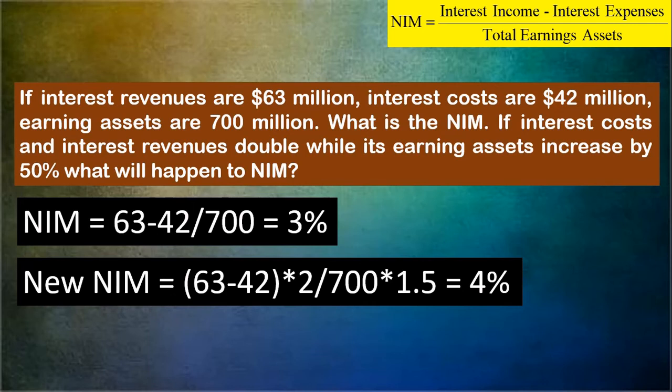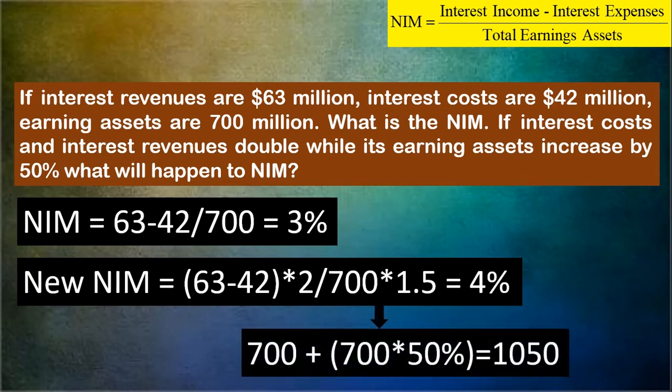And then divided by 700 multiplied by 1.5, because total earning assets increased by 50 percent. We can also calculate it as 700 plus 700 multiplied by 50 percent. The result gives us the new NIM, which is approximately 2.4 percent — or as calculated, the new net interest margin after the changes.